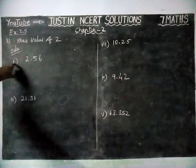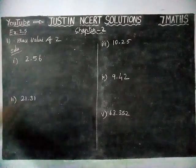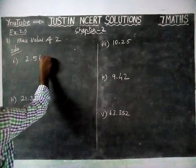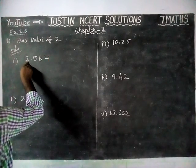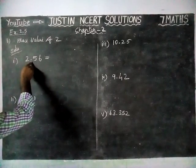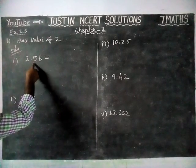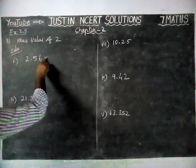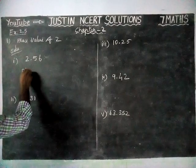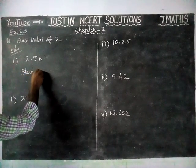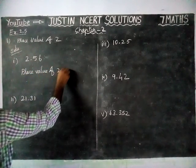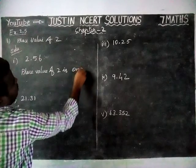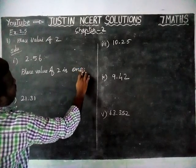First sum, 2.56. If you are expanding this, this is 1's place, then decimal part, 10ths, 100ths place. So, place value of 2 is ones place.